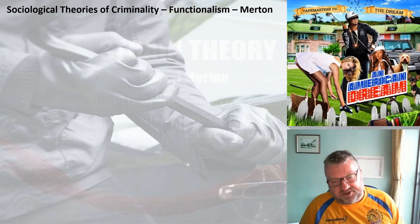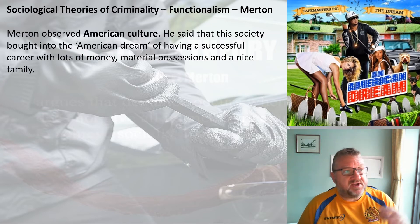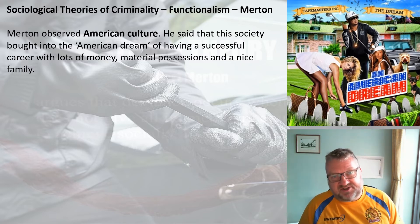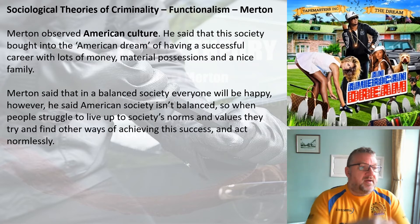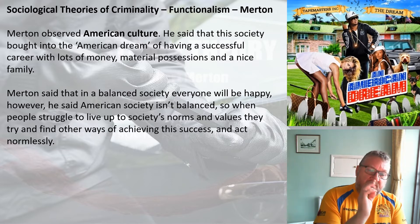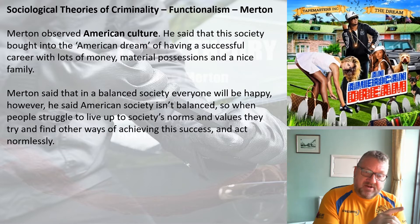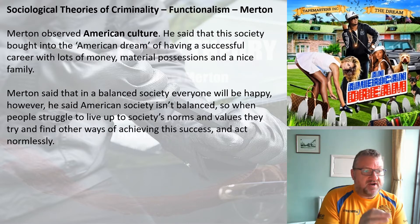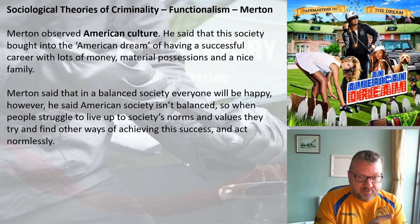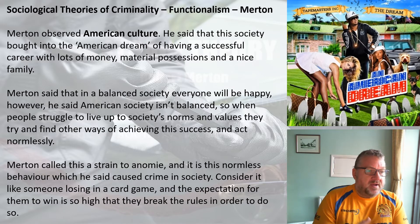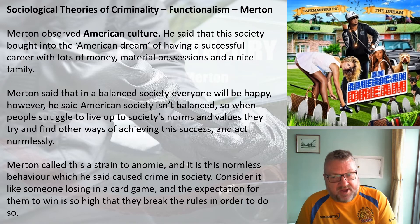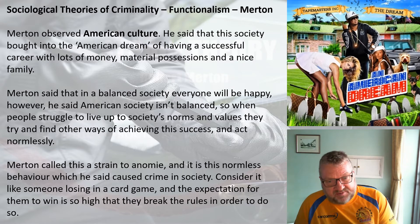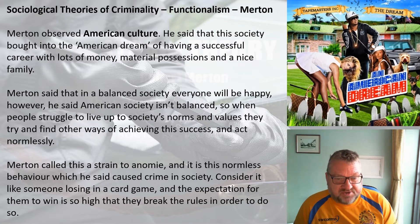Merton observed American culture and said that society bought into what he called the American dream — having a successful career, lots of money, material possessions, a nice family. In a balanced society everyone would be happy. However, for Merton, American society isn't balanced. When people struggle to live up to society's norms and values, they try to find other ways of achieving success and act normlessly. Merton calls this a strain to anomie, and it's this normless behaviour which he says causes crime — like someone losing in a card game who breaks the rules because the expectation is so high.